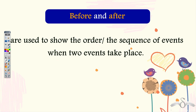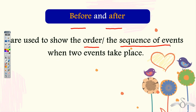So what did we learn today? We learnt that 'before' and 'after' are two conjunctions used to show the order or the sequence of events. When two events take place, 'before' means 'earlier than' and 'after' means 'later than.'